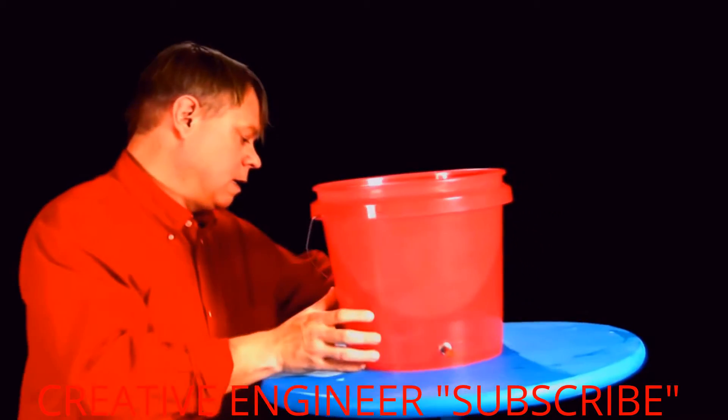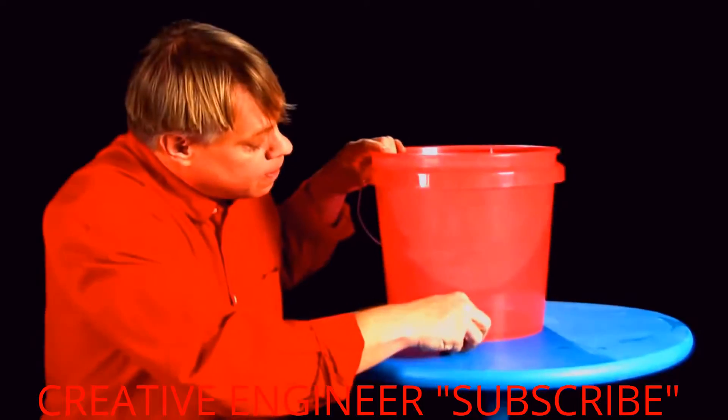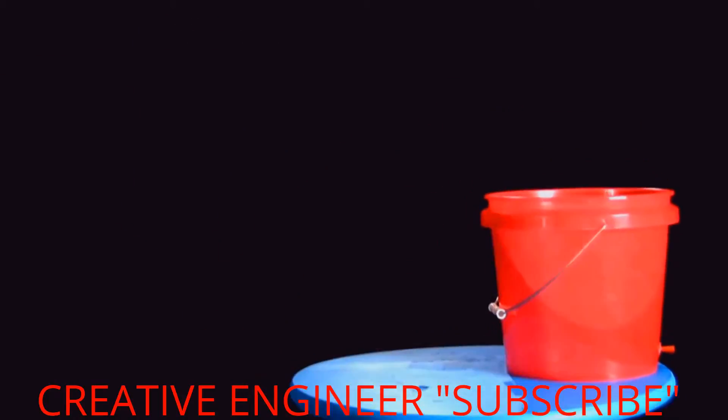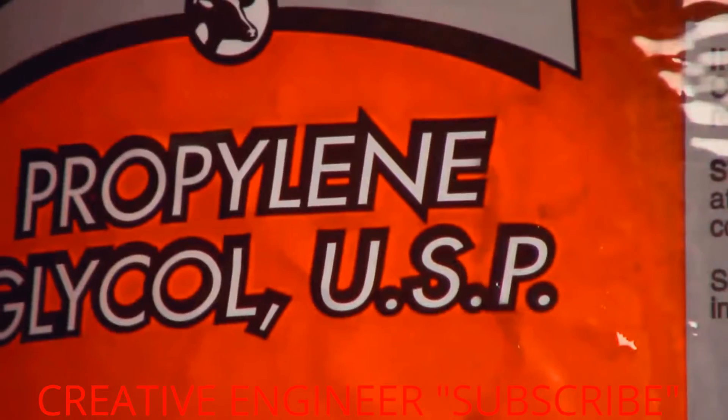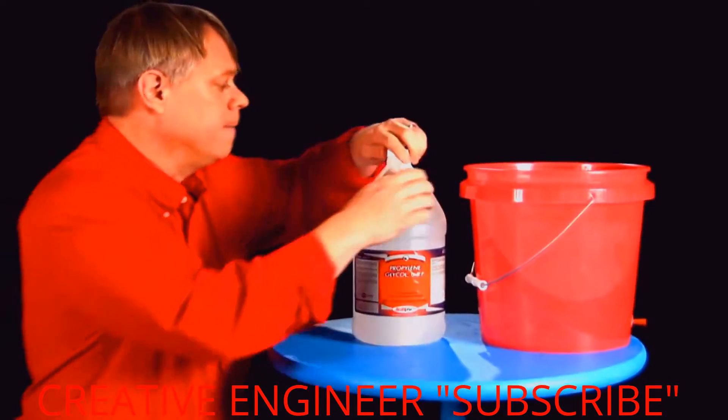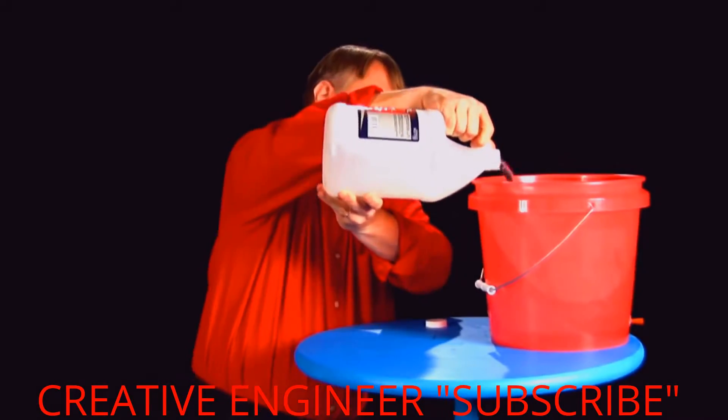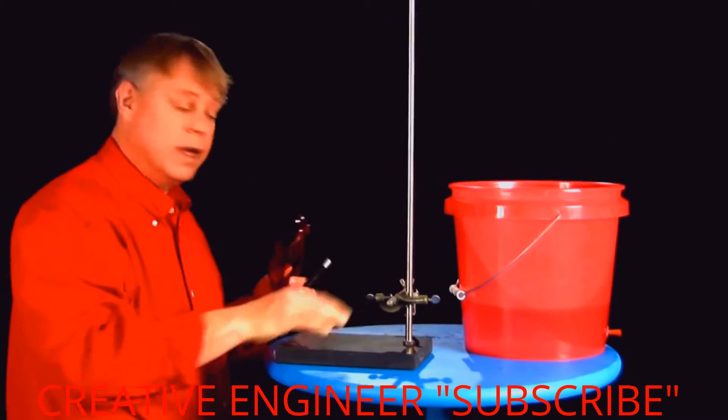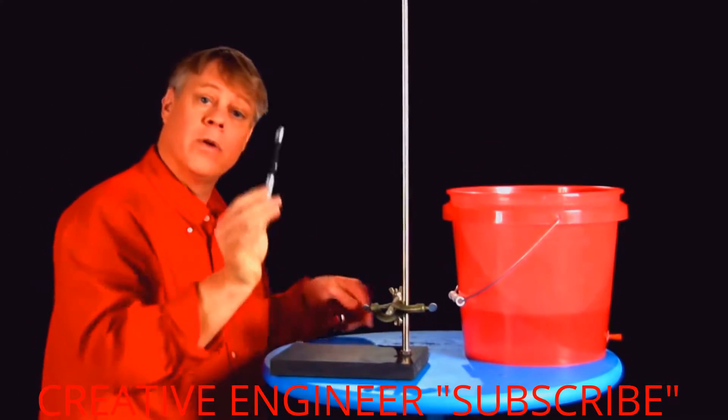I have a bucket that I modified with a window in front. And on the other side, I put a stopper in this hole right here. I have a bottle of propylene glycol with just a little bit of creamer in it. A ring stand. And of course, a laser pointer.